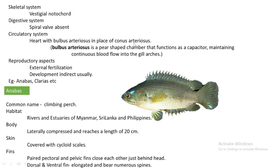Regarding the circulatory system, the heart has a bulbus arteriosus in place of the conus arteriosus. Both are small pouch-like structures, but the bulbus arteriosus is a pear-shaped chamber. It functions as a capacitor and improves blood flow to the gill arches.